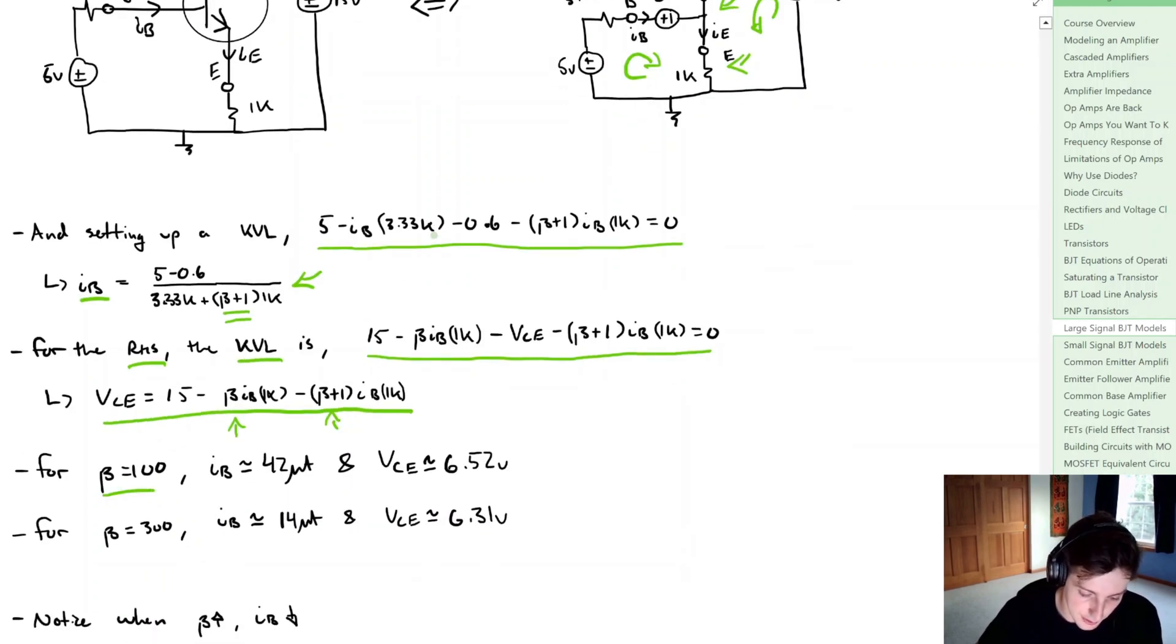If beta is equal to 100, the base current is approximately 42 microamps and VCE is approximately 6.52 volts. If beta is equal to 300, the base current is equal to 14 microamps and VCE is approximately equal to 6.31 volts.